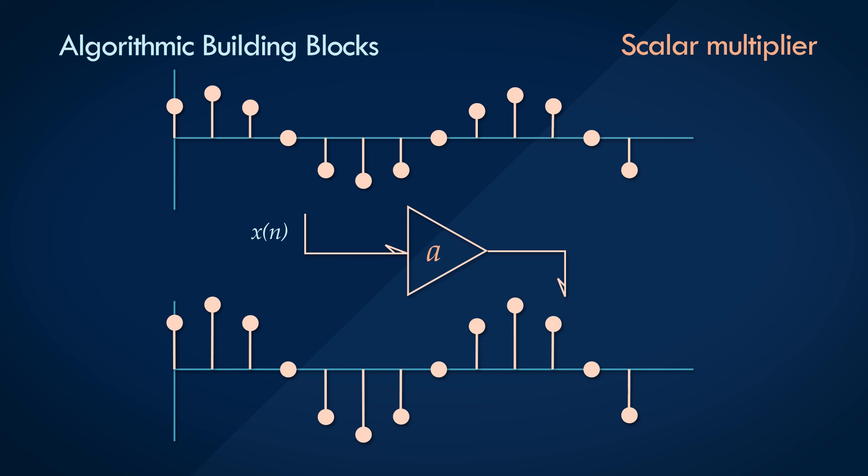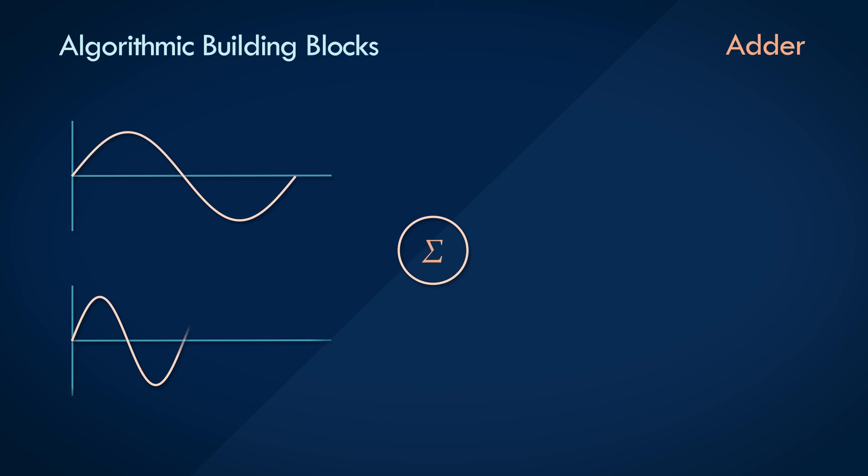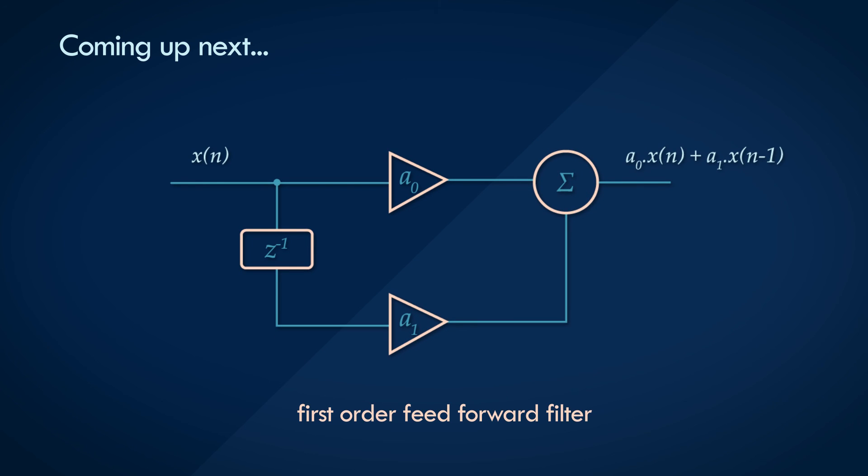Finally, we have the adder block for adding or subtracting two signals. Addition and subtraction are really the same operation, because subtraction is the addition of a negative number. The operation of mixing signals is really the mathematical operation of addition. The notation that's used is a circle with a sigma symbol in it. So if two signals, p(n) and q(n) were to be combined via an adder, the resultant output would be p(n) plus q(n). Simple so far, right? In the next video, we'll get right into it. We'll use these algorithmic building blocks to build our first filter, a first order feed forward filter, and then we'll analyze how the filter responds to the test input signals that we discussed at the beginning of this video.